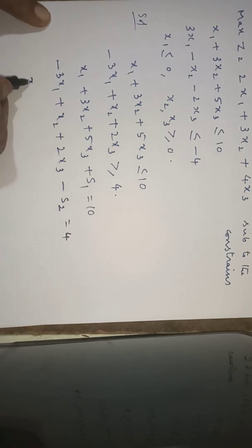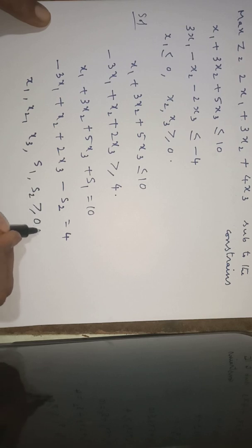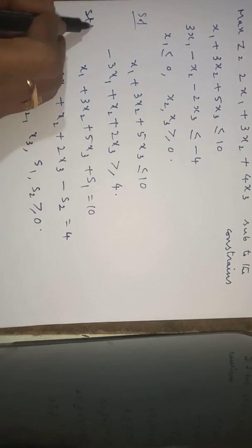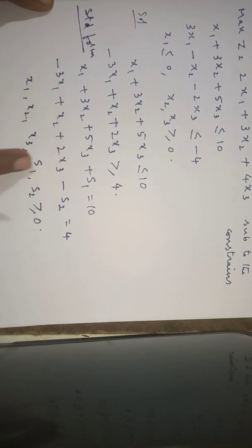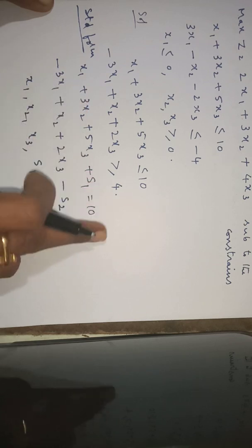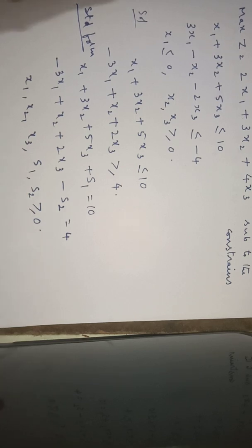All decision variables x1, x2, x3 as well as s1 and s2 are greater than or equal to 0. This is the standard form: maximize z equal to 2x1 plus 3x2 plus 4x3, subject to: first constraint plus s1 equals 10, second constraint minus s2 equals 4, and all variables including s1, s2 greater than or equal to 0.